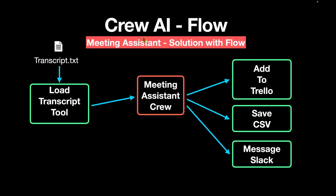We can design a crew AI flow to address that problem. We have the transcript saved as a text file, which can be loaded into the project using a load transcript tool — a simple Python function to load a TXT file. That in turn feeds into a main crew which consists of agents working as a meeting assistant. They generate a list of tasks as output, which are then fed into Trello via an API, saved as a CSV file, and fed into a Slack API that sends messages to the team members.